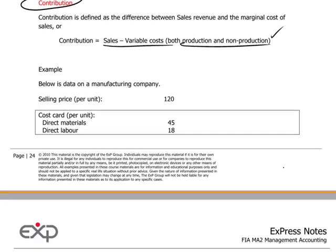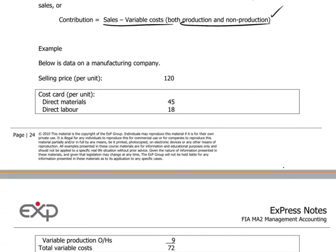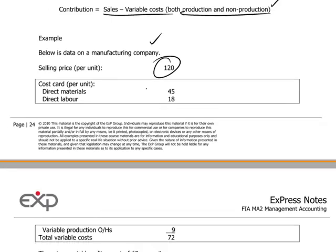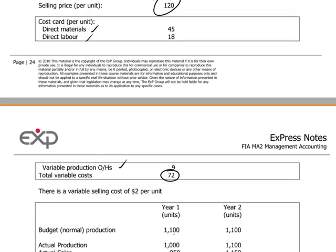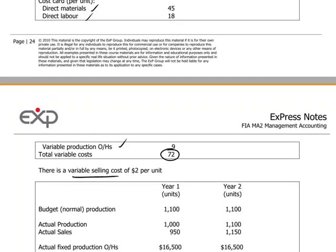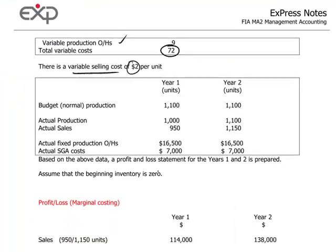To make this idea clear, let's look at a manufacturing company with a selling price of $120 per unit. The cost card shows direct materials, direct labor, and variable production overheads — these are all variable costs adding up to $72 per unit. There's also a variable selling cost of $2 per unit. Let's keep that in mind and look at two years' worth of trading at the company.